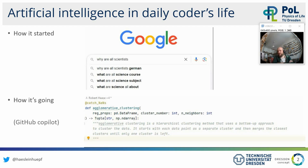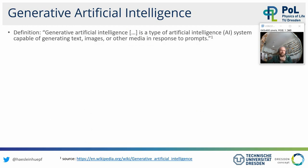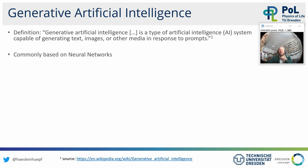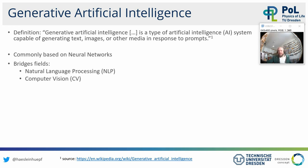In today's lecture, I would like to show how this is relevant for image analysts who write image analysis code on a daily basis. Generative artificial intelligence is a type of AI capable of generating text, images, or other media in response to prompts. It is commonly based on neural networks and bridges two research fields: natural language processing and computer vision.